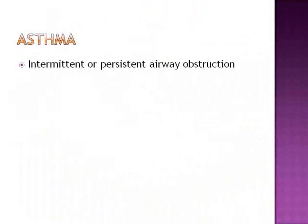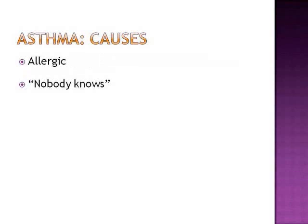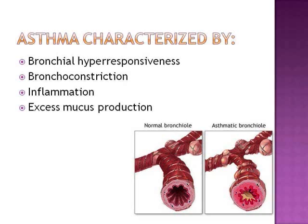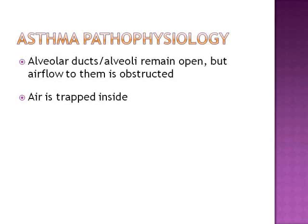Asthma. It's intermittent or persistent airway obstruction, quite often because of allergens in the environment, though we often don't know what is causing it in an individual. It is characterized by bronchial hyper-responsiveness — the level of allergen has to be quite low for the bronchioles to over-respond. What would normally cause a little response in a normal person will cause a big response in someone with asthma. There's bronchial constriction, inflammation, and excess mucus production. The alveolar ducts and the alveoli remain open, but the airflow into and out of them is obstructed, so air is trapped inside.